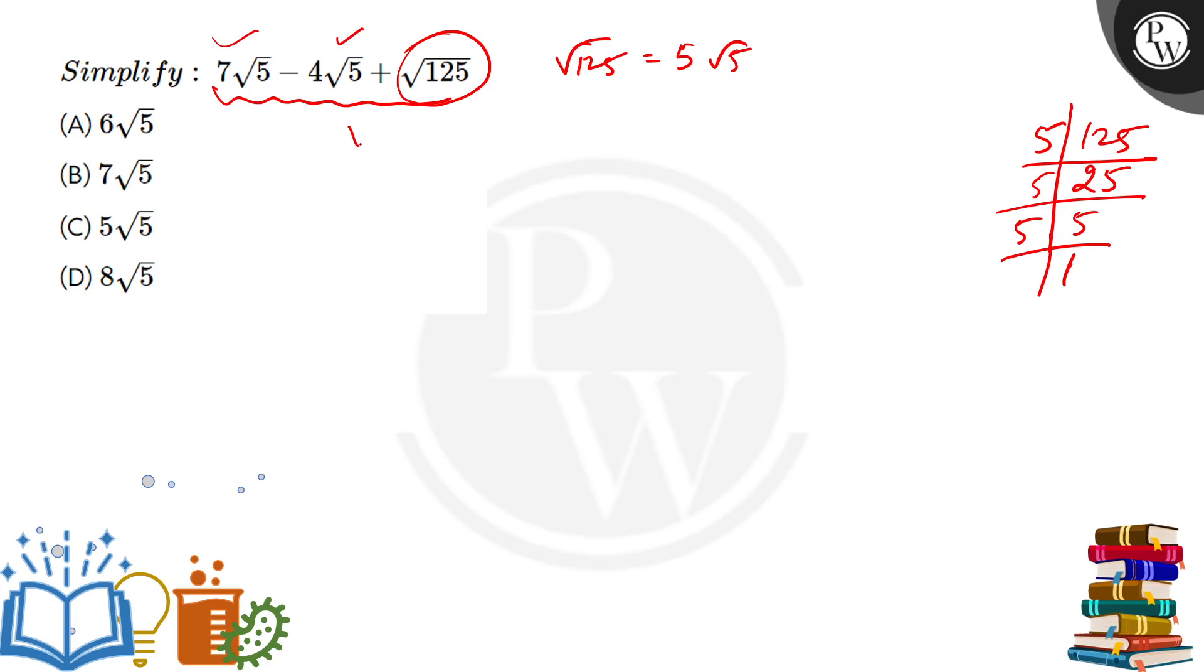If we write this expression: 7 root 5 minus 4 root 5 plus 5 root 5. Now 7 root 5 minus 4 root 5 will give me 3 root 5, plus 5 root 5 will give me 8 root 5, which is option D.